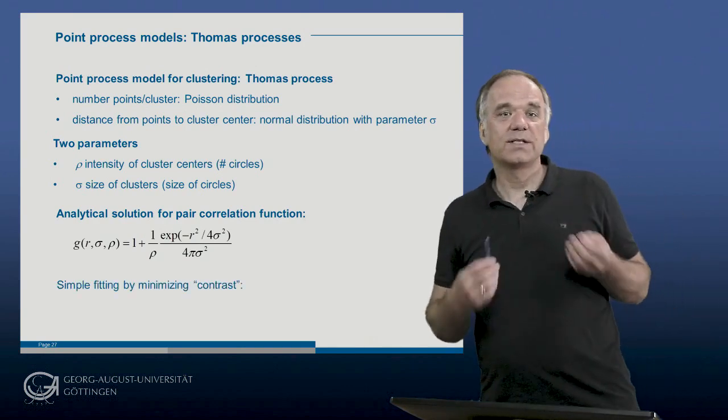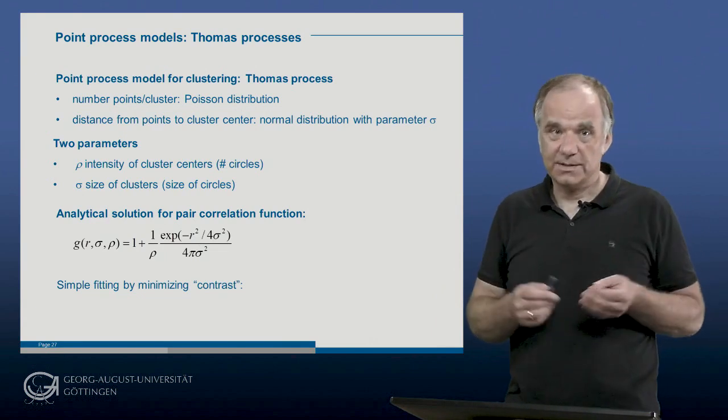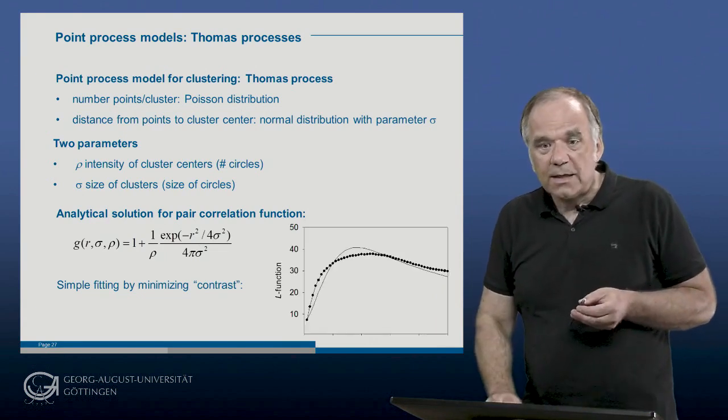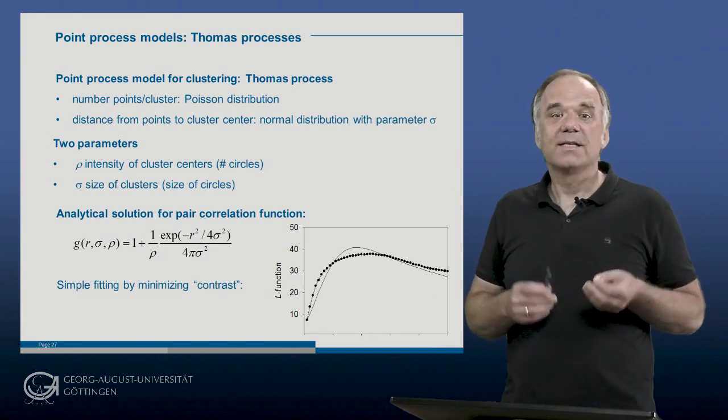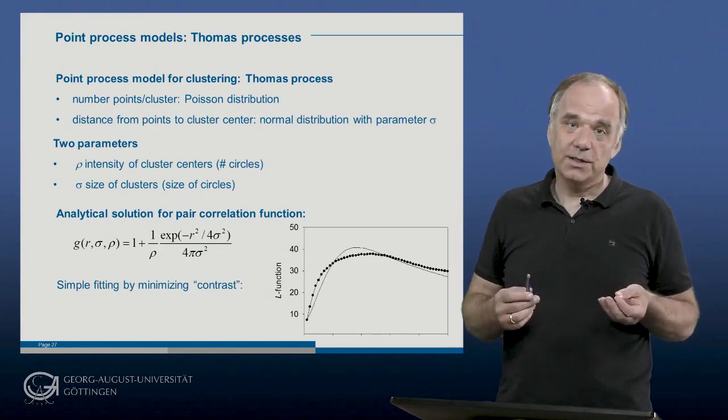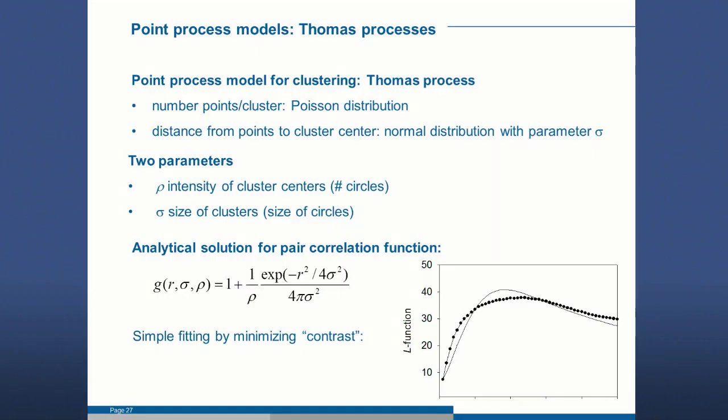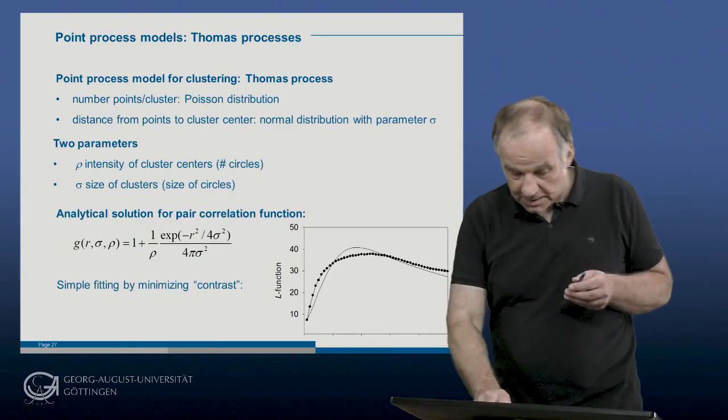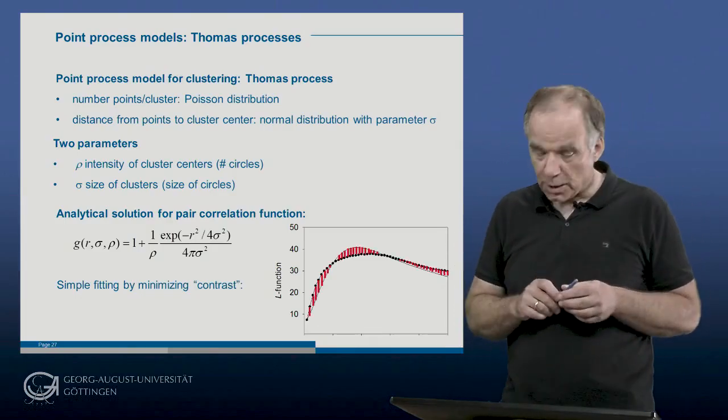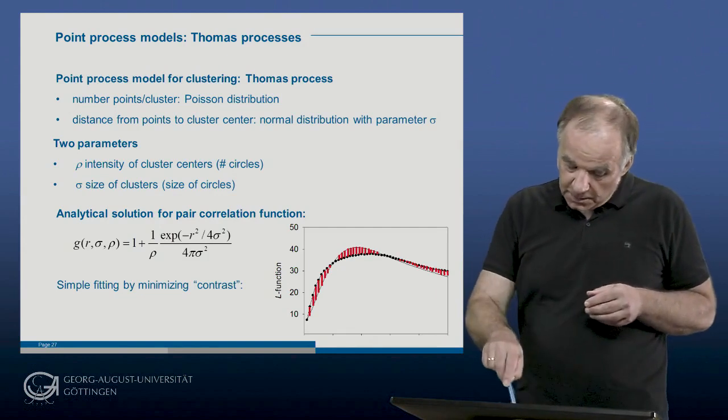And to do this, we use a technique called minimum contrast. What we do basically in this technique is that we calculate the area between the theoretical curve and the observed curve. So this thing here is the observed function and this one here is the theoretical one indicated by the pair correlation function for the two different parameters.